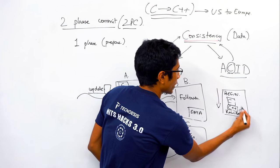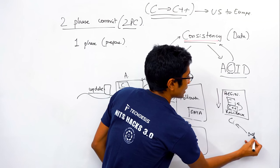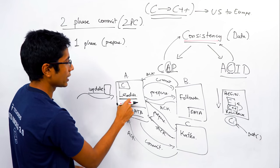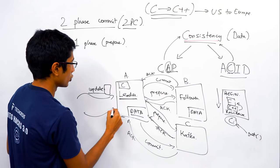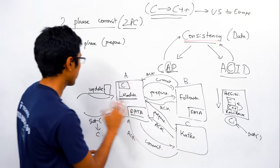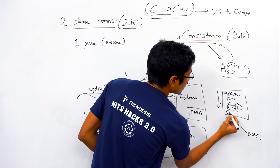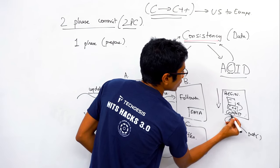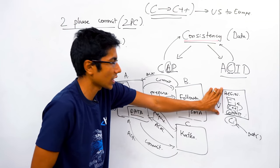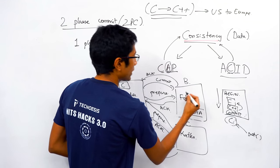Now if someone reads, they get C. After the rollback, a get operation returns C. On the other hand, if things go well, the leader sends a commit message to all followers. When a follower receives the commit, it commits the transaction — the data is no longer C, it is now C++.